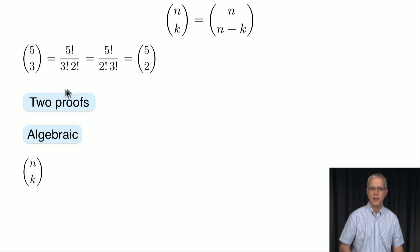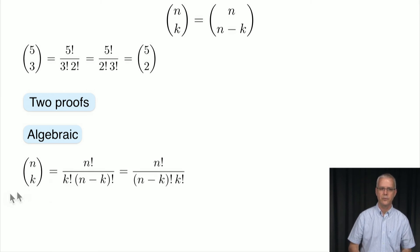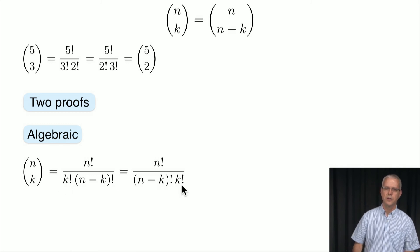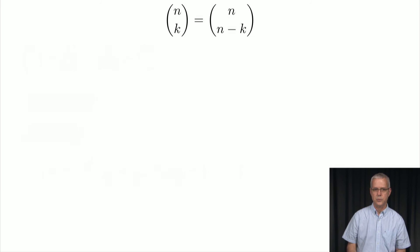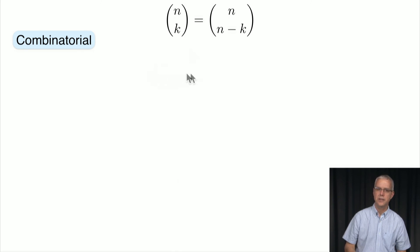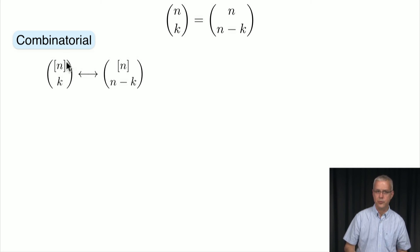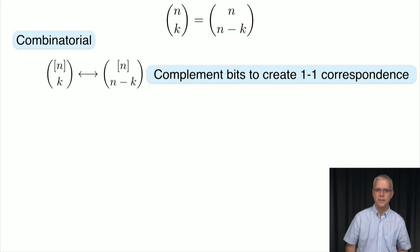The first proof is algebraic. n choose k is n! divided by k! times (n minus k)!. We can reorganize the denominator as (n minus k)! times k!, and that gives us n choose n minus k. For a second proof, we count the same collection of elements in two different ways — showing a one-to-one correspondence between n-bit strings with k 1s and strings of length n with n minus k 1s.